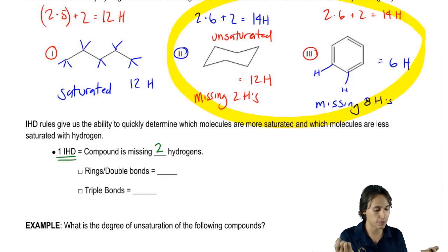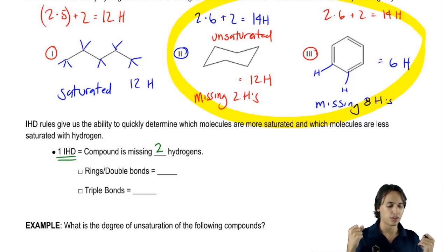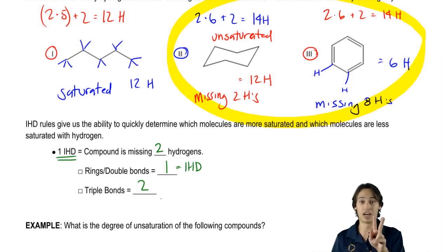That's just like the conversion. The way that this works is that a ring or a double bond is going to count as one IHD. And then a triple bond is going to count as two IHD. Because if you think about it, a triple bond has two pi bonds in it, so that would be two IHD.